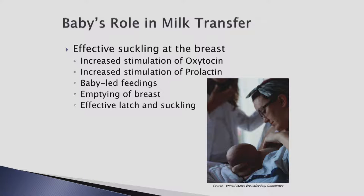When babies latch effectively, they stimulate milk production and removal. During effective suckling, the nipple is stretched into the back of the baby's throat with the lips flanged over the areola to stimulate nerve fibers. A shallow latch will not stretch the nipple effectively or provide enough stimulation to the areola for milk production or adequate milk removal. The breast will also not fully empty, which will lead to decreased milk production. A shallow latch will also cause sore nipples, resulting in discomfort, pain, and a sense of fear at subsequent feedings, ultimately reducing the amount of milk produced and possibly causing delayed or missed feedings.